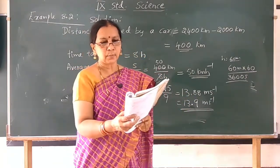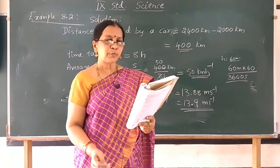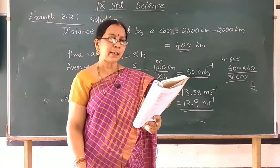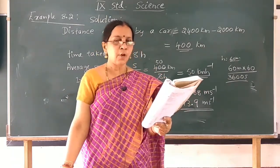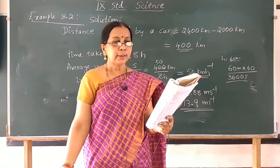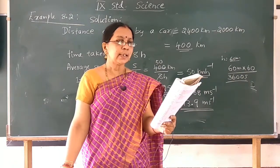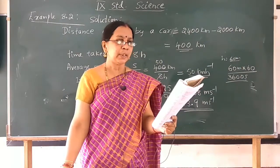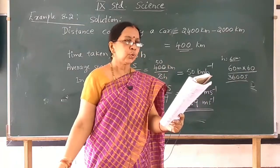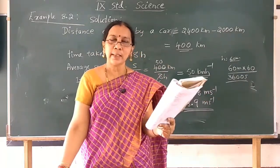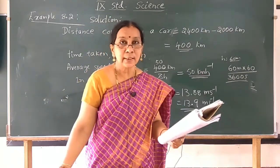Another problem: Usha swims in a 90 meter long pool. She covers 180 meters in 1 minute by swimming from one end to the other and back along the same straight path. Find the average speed and average velocity of Usha. Total distance covered by Usha is 180 meters in 1 minute. Displacement of Usha in 1 minute is 0.